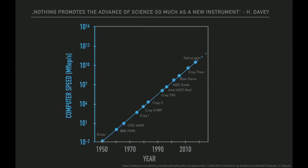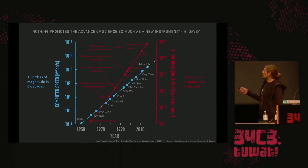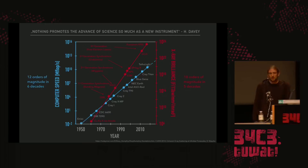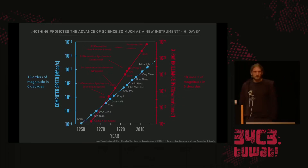To relate the development of brilliance to something familiar: you all know Moore's law, and you have a feeling for what it means when a figure of merit increases by 12 orders of magnitude over six decades. The X-ray brilliance increased by 18 orders of magnitude in five decades — not through small innovations but through very different steps: different generations of synchrotron light sources, with the fourth generation being X-ray free electron lasers.